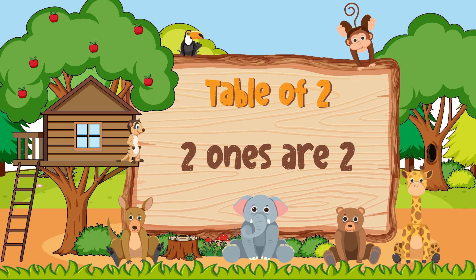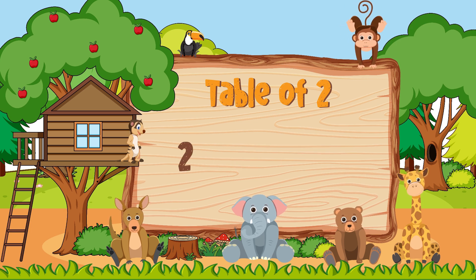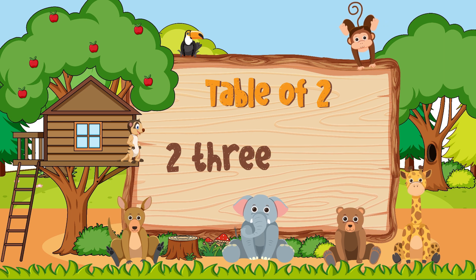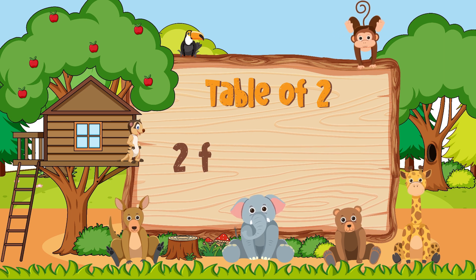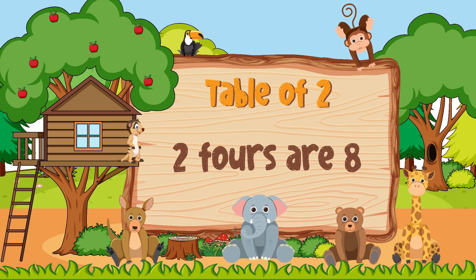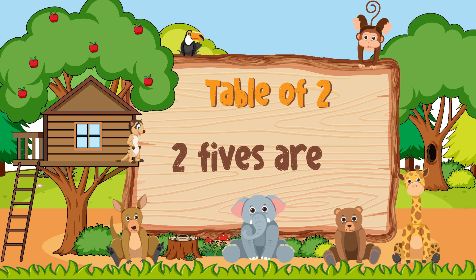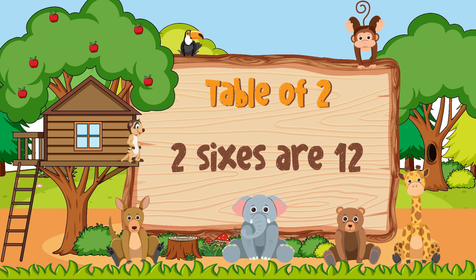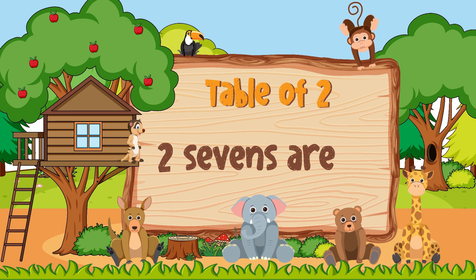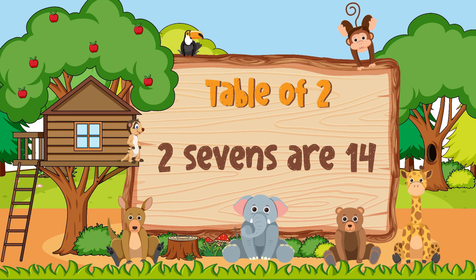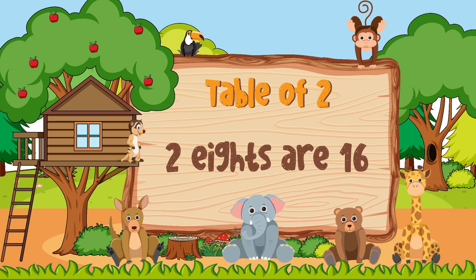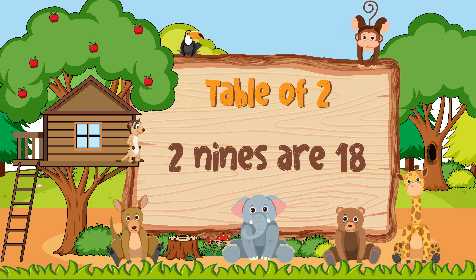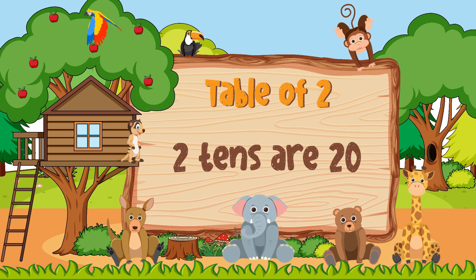2 1's are 2, 2 2's are 4, 2 3's are 6, 2 4's are 8, 2 5's are 10, 2 6's are 12, 2 7's are 14, 2 8's are 16, 2 9's are 18, 2 10's are 20.